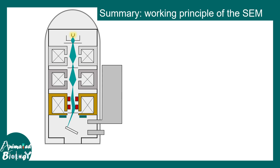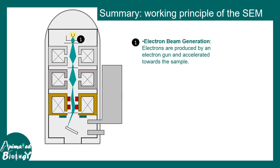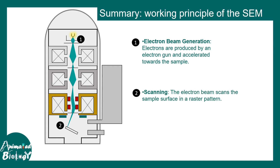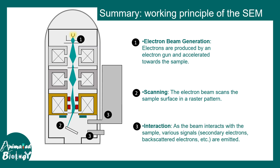Summarizing the working principle of SEM: the three important components are the electron beam generator, the scanning modality performed by electromagnetic coils and objective lenses, and the interaction with the specimen, which is detected by several detectors — secondary electron detectors and backscattered electron detectors, among others.